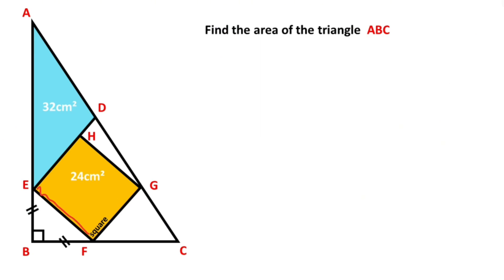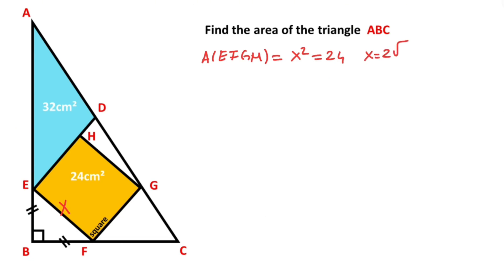First, let's call the side length here x, so the value of the square is equal to x squared. So x squared equals 24, that means x equals 2 root 6.